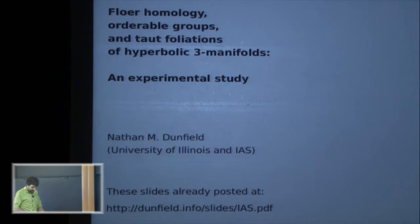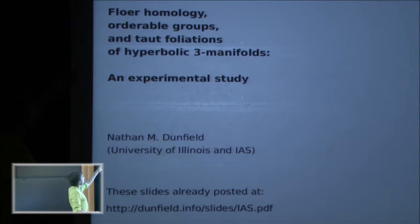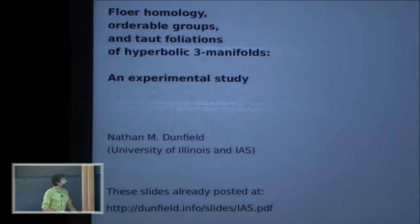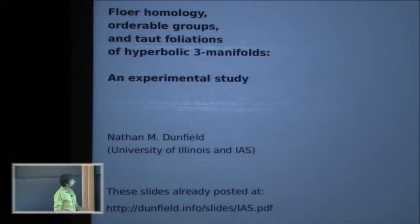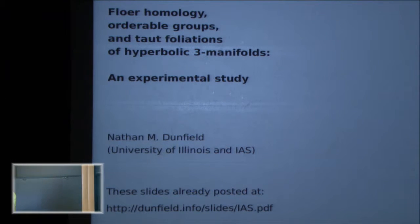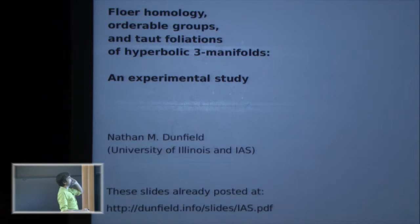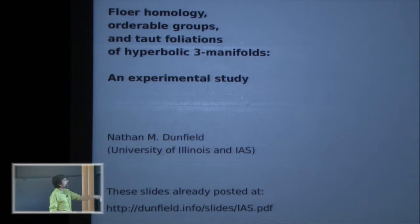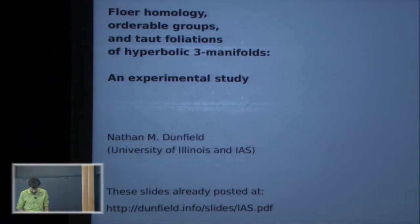I want to talk about a somewhat implausible conjecture that relates three things: Floer homology, something coming out of gauge theory and symplectic geometry; something more algebraic involving orders on groups or actions of groups on the line; and then something which is of course the theme of this conference, namely taut foliations.